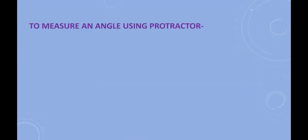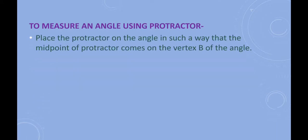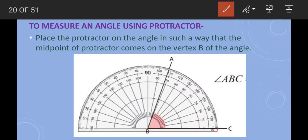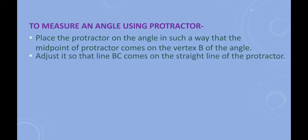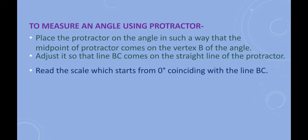Now, how to measure an angle using the protractor. First step: place the protractor on the angle such that the midpoint — the center of the protractor — coincides with the vertex B of the angle. For example, for angle ABC, the center of the protractor must coincide with vertex B. Second step: adjust it so that line BC coincides with the baseline of the protractor.